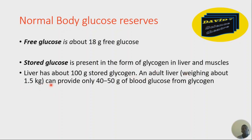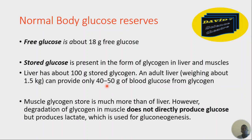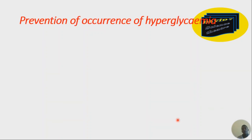The liver has about 100 grams of stored glycogen, and an adult liver weighing about one and a half kilograms can provide only about 40 to 50 grams of blood glucose from glycogen. Muscle glycogen stores are much greater than that of the liver; however, degradation of glycogen in the muscle doesn't directly produce glucose but produces lactate, which is used for gluconeogenesis in the liver.